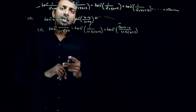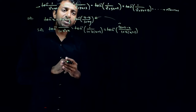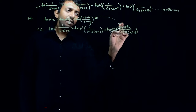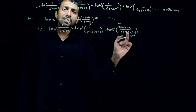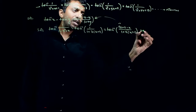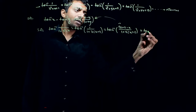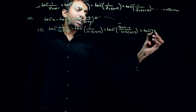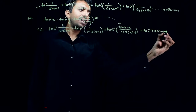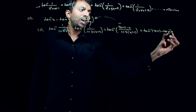Can you see the comparison? Tan inverse of (something minus something) divided by (1 plus something times something) — that is equal to tan inverse of (x plus 1) minus tan inverse of x.